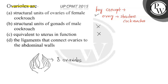Ovarioles are not present in male cockroaches, not equivalent to uterus in function, and not ligaments. So the correct option is A, because ovarioles are structural units of ovaries of female cockroaches and are eight in number. Hope you understood it well, best of luck.